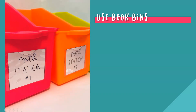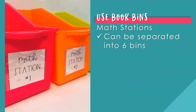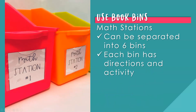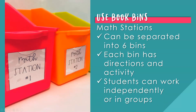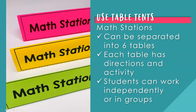One method for organization is the use of book bins. Math stations can use book bins with each bin holding the appropriate materials for each station. Label your book bins numbers one to six — these can be separated into six bins with each bin having directions and an activity included. Students can work independently or in groups with the bins. Another method that works well is using table tents, which separate math stations into six different table groups. Each table then has the directions and activity for each group, and students can work independently or in groups at the table.